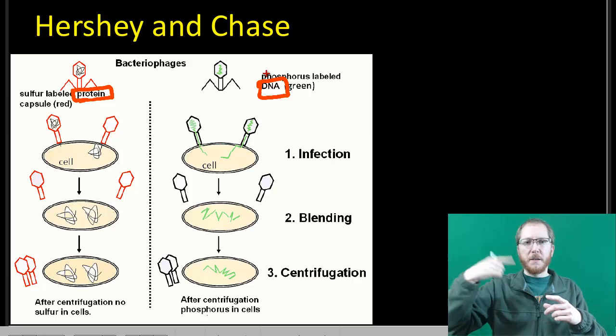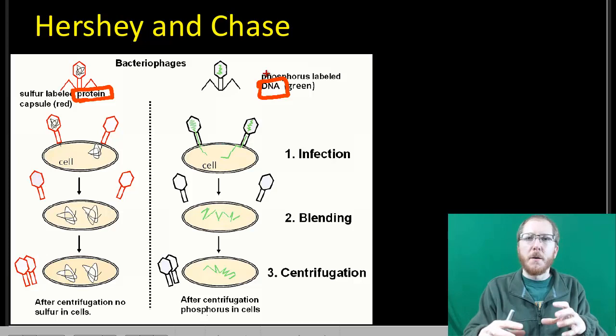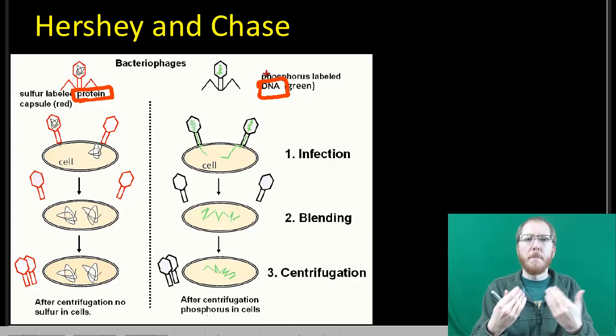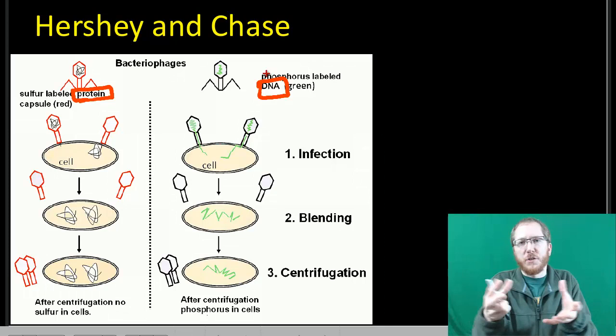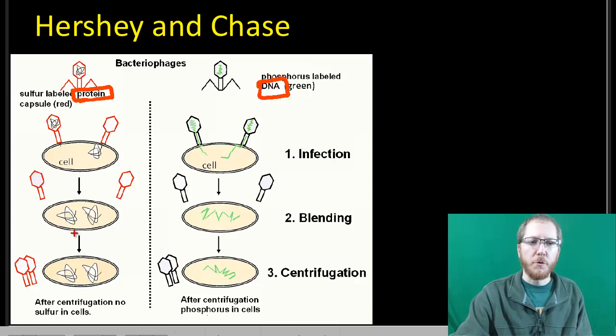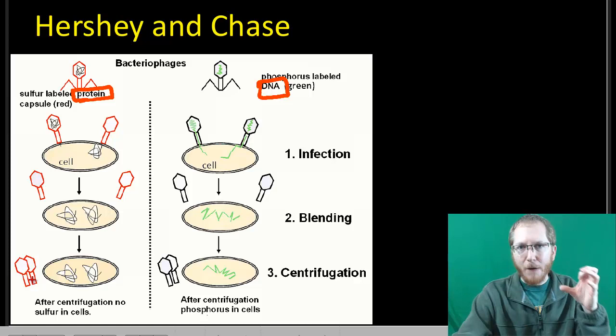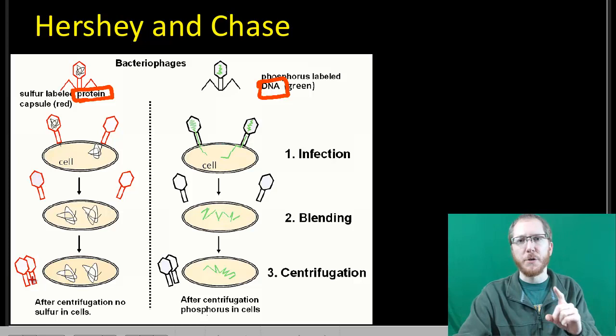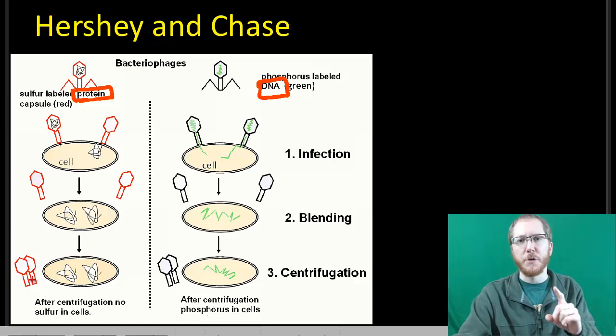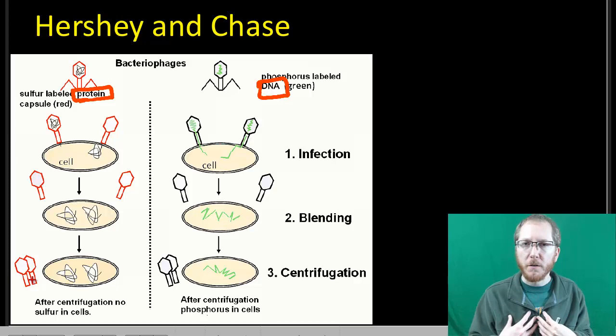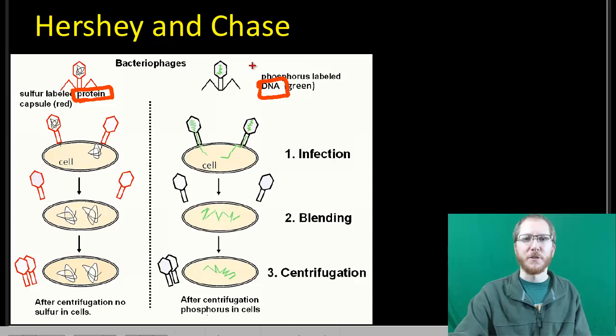They then allowed them to infect the bacteria. They centrifuged them, spun them around really fast, and the bacteria sink to the bottom forming a pellet. The fluid above it, the supernatant, floats with whatever else is in the water. They found in that pellet, in the bacteria, there was no radioactive sulfur. All the radioactive sulfur was in the supernatant. They found the radioactive phosphorus, the DNA, was inside the bacteria. This one definitively proved DNA was our genetic information.